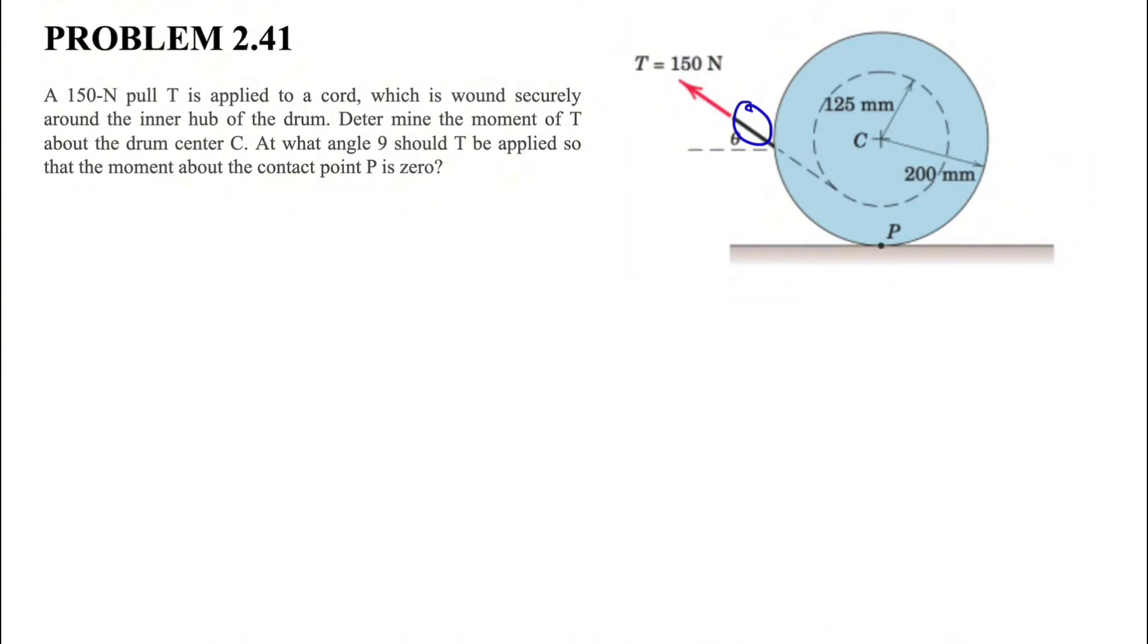We need to find the moment of T about point C. In the second part of the question, it's asking at what angle theta - this is a typo here, this theta - should T be applied so that the moment about the contact point P is zero.